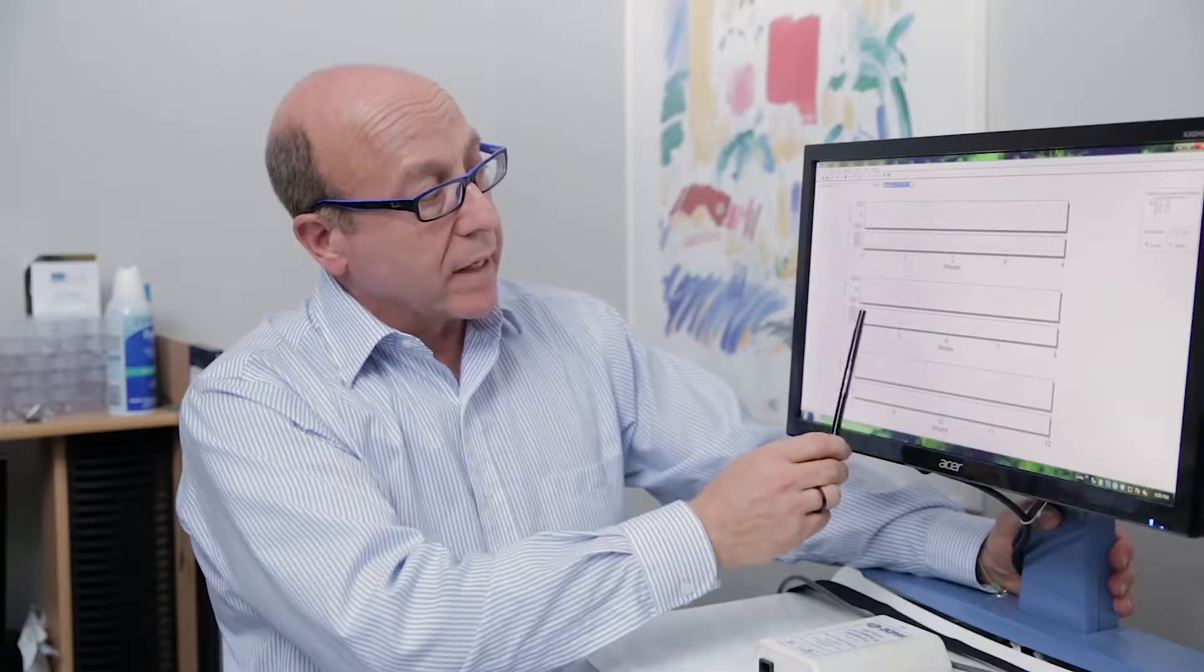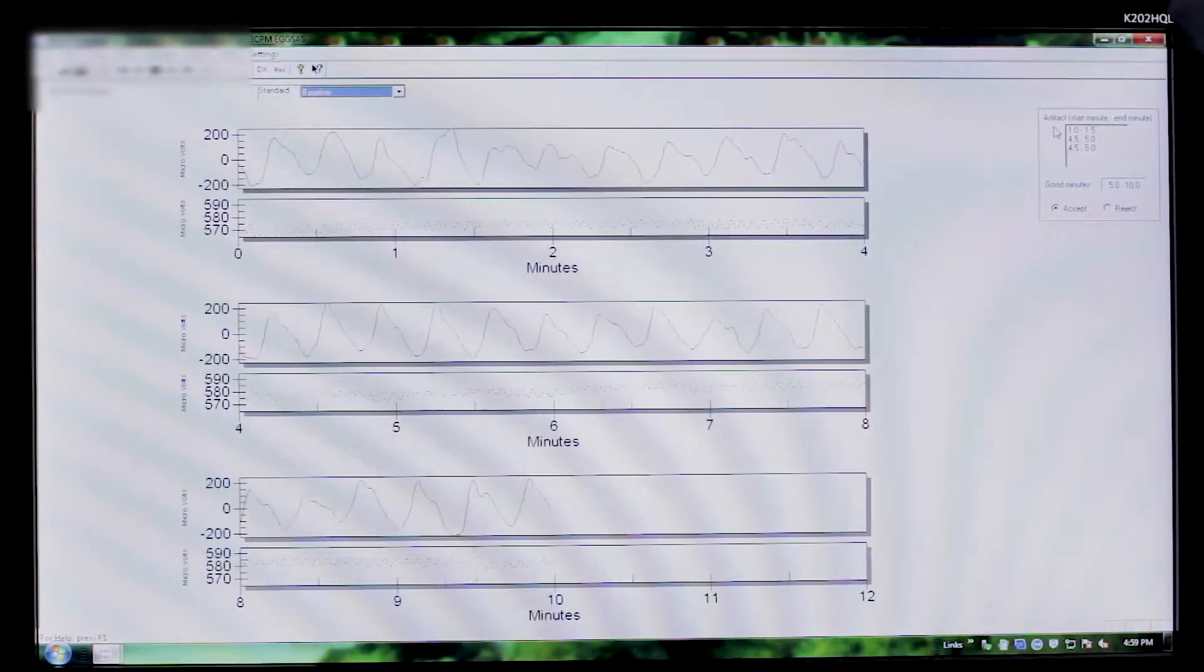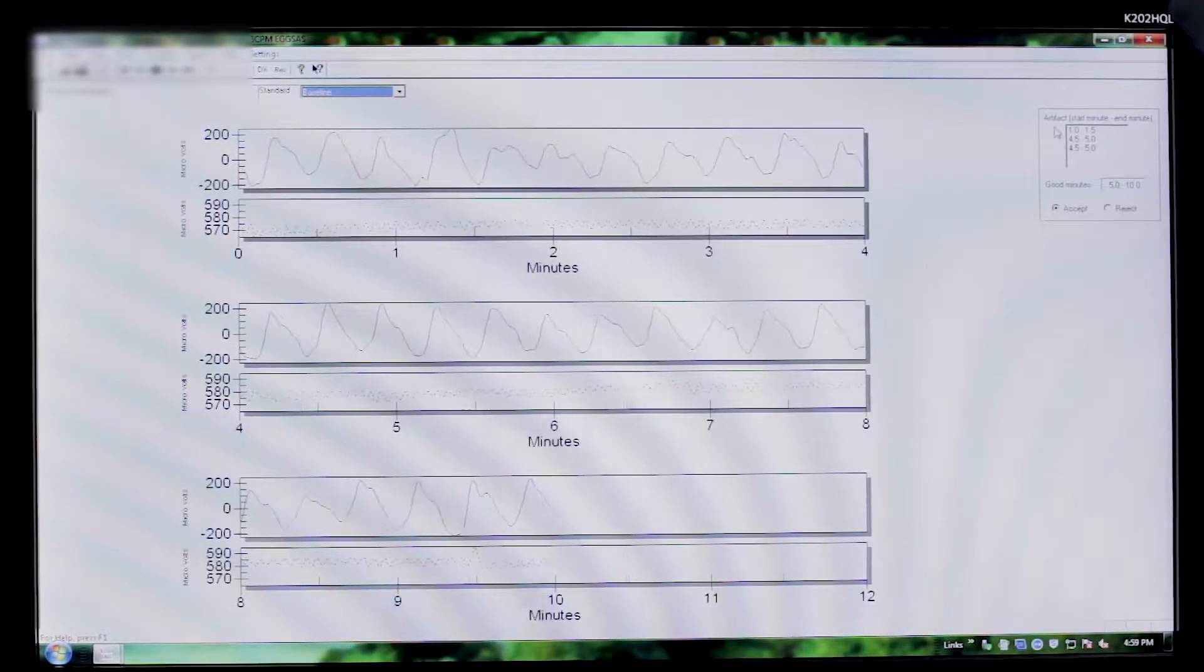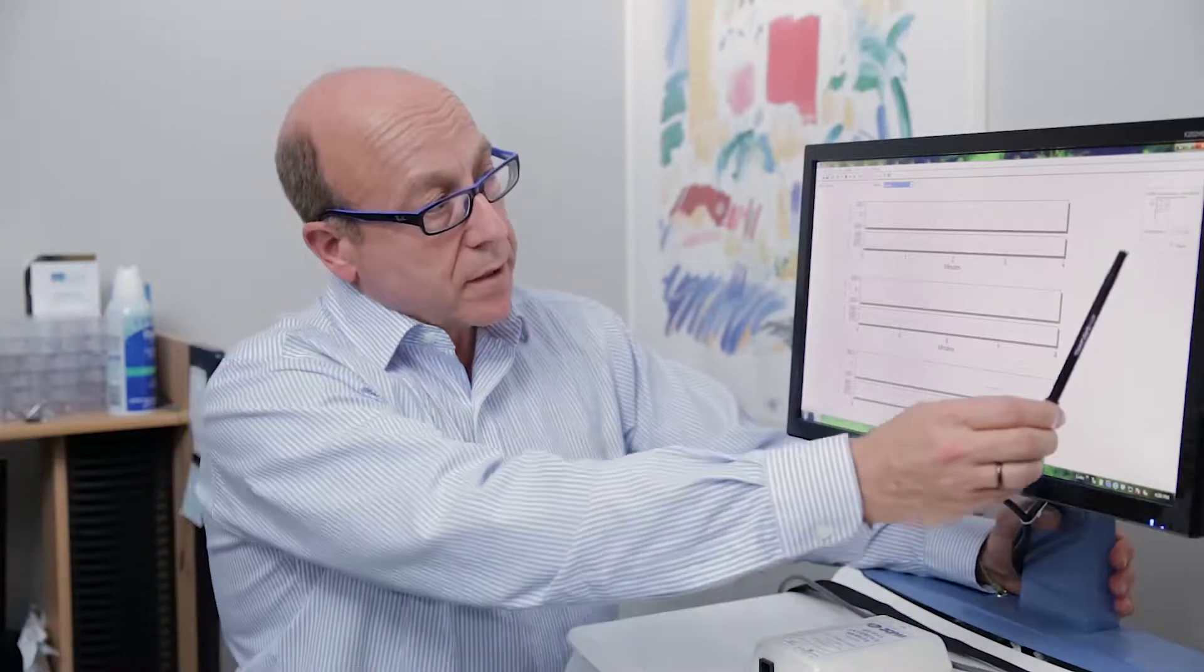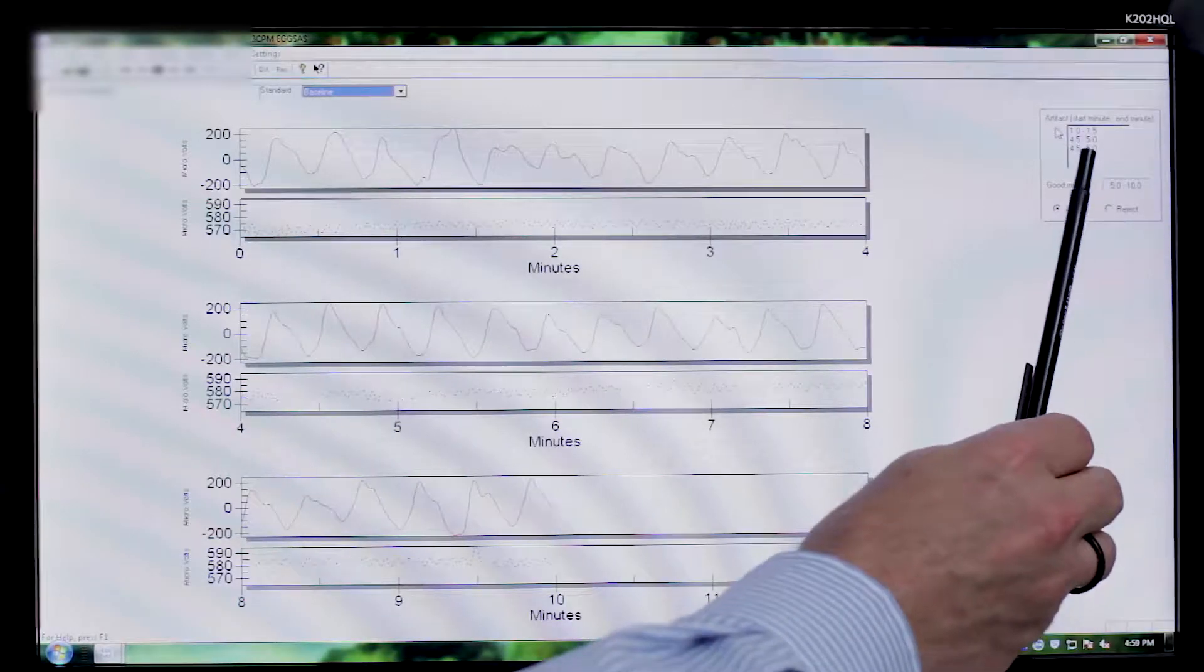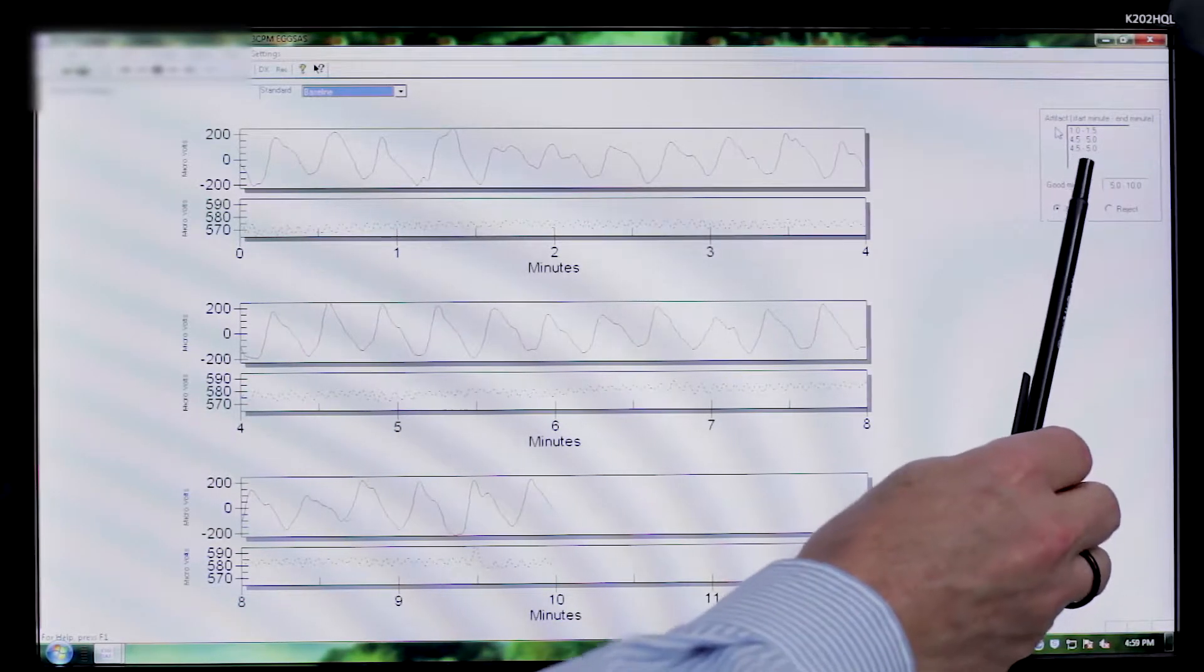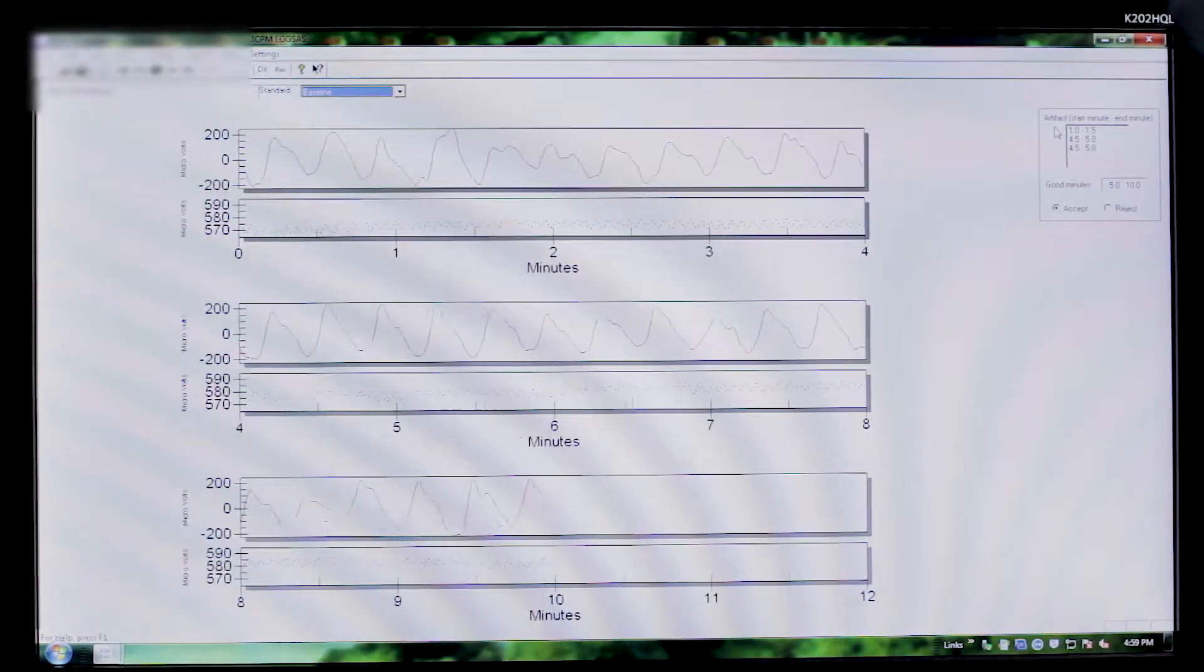Most of the time you'll see in this box here have been pre-selected by the algorithm built into the EGG software, and so it's telling us that minutes 1 to 1.5, 4.5 to 5, and 4.5 to 5 are artifactual.